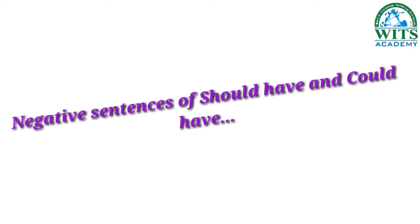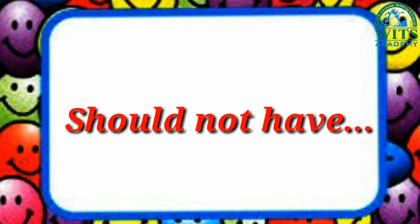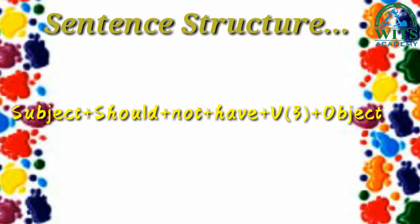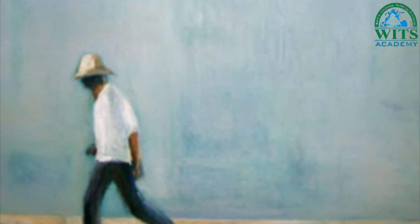Now dear students, come towards the negative sentences of should have and could have. Starting with 'should not have.' Sentence structure: subject plus should not plus have plus verb third form plus object. For example, if I say I should not go there, but I went over there and got insulted, and after that I felt I should not have gone there so that I would not be insulted.